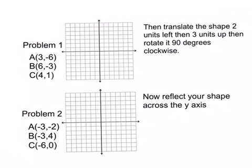So here are the two examples which I'm going to show you how to do. So what we have to do for the first one is to draw the coordinates on the screen. So here we go, so A 3, negative 6, 6, negative 3, and 4, 1.